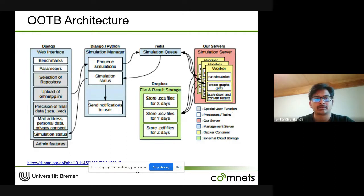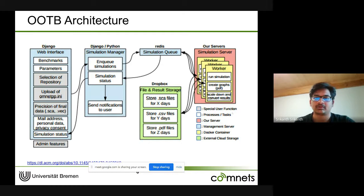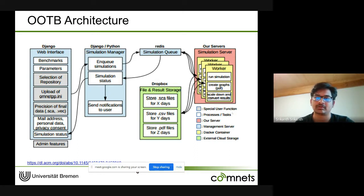The OOTB architecture has a front-end web interface where the user initiates a simulation by uploading an ini file or specifying parameters. Once initiated, simulations are passed to the simulation manager, which creates a job and enqueues them. These queued simulations are stored in a Redis database and run on a simulation server. The server uses Docker containers, each hosting a Linux-based instance of OMNeT++. When an instance is free, it fetches a pending simulation from the queue, executes it, and results are stored in external cloud storage like Dropbox.